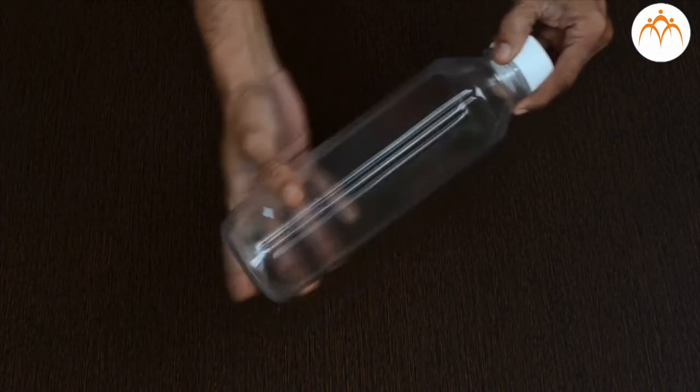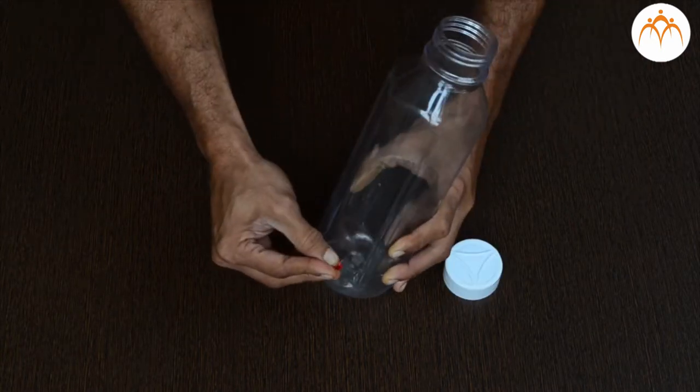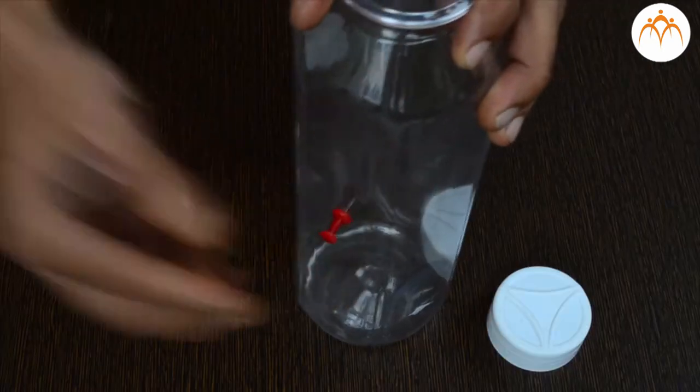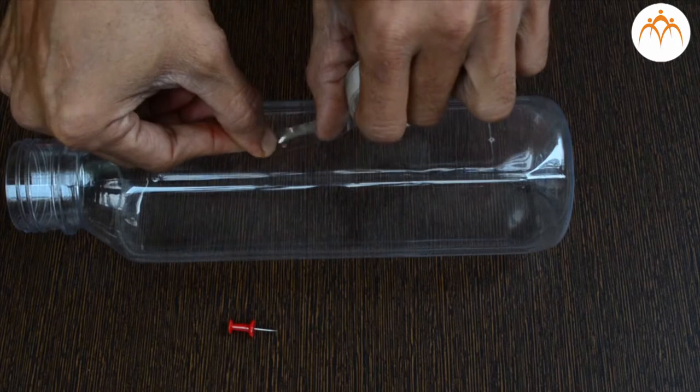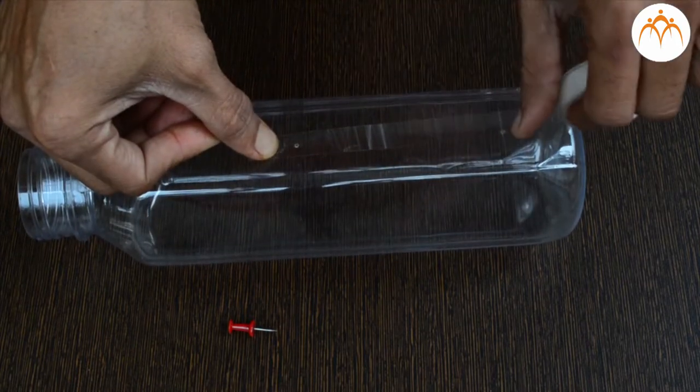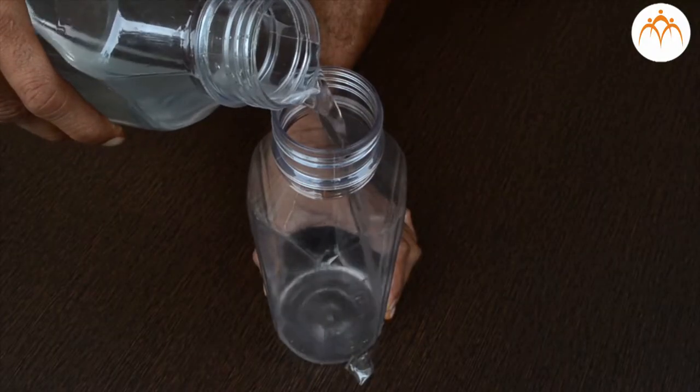Let's take this plastic bottle and poke two holes. One at the bottom and one in the middle. We will temporarily close these holes with tape. Now fill the bottle with water.